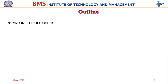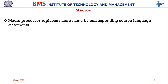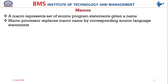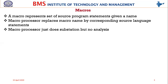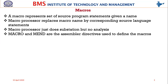Coming back to our discussion: a macro processor replaces the macro name wherever it appears with the corresponding source language statements. It may be one statement or a set of statements - the macro name will be replaced by the set of statements defined as a macro. A macro represents a set of source program statements which is given a name, and invocation happens wherever that name appears in the program. The macro processor doesn't do any analysis, just substitution.